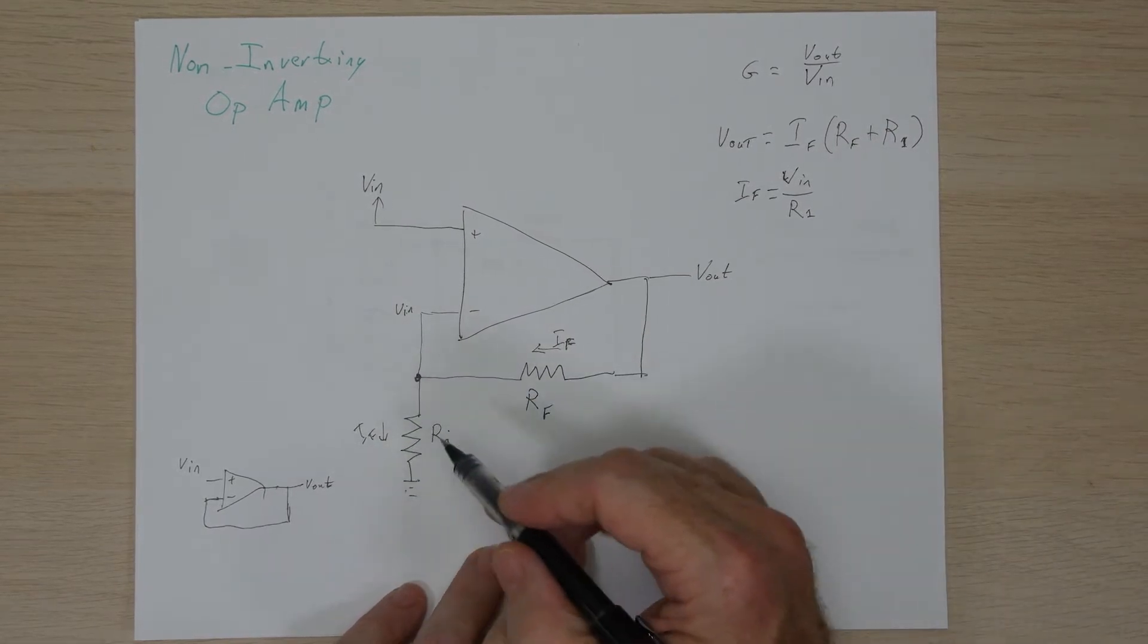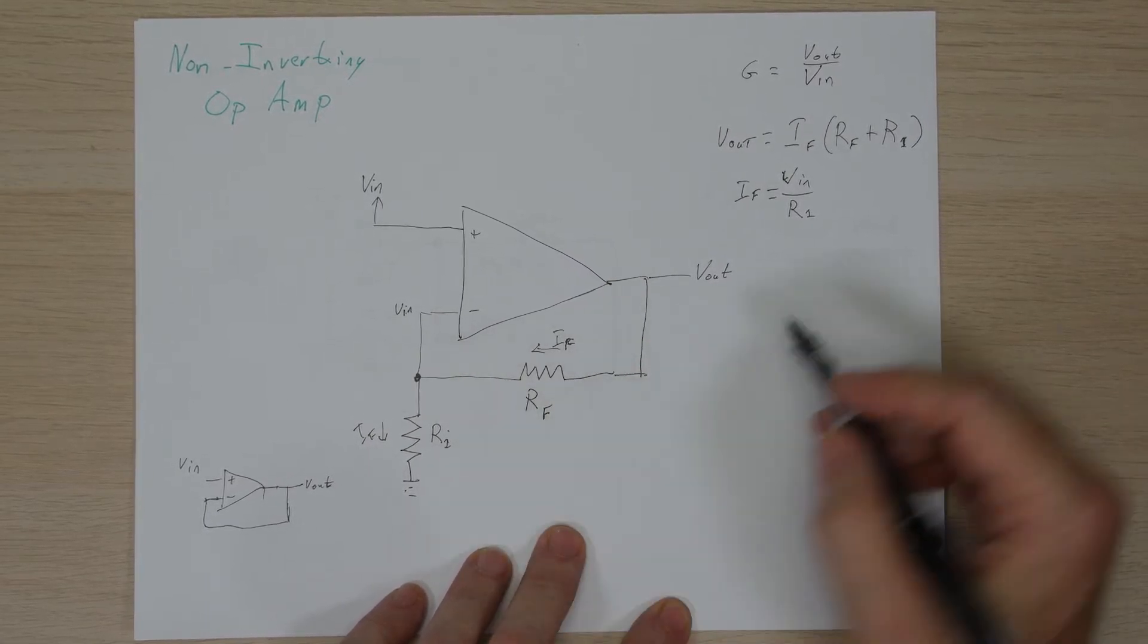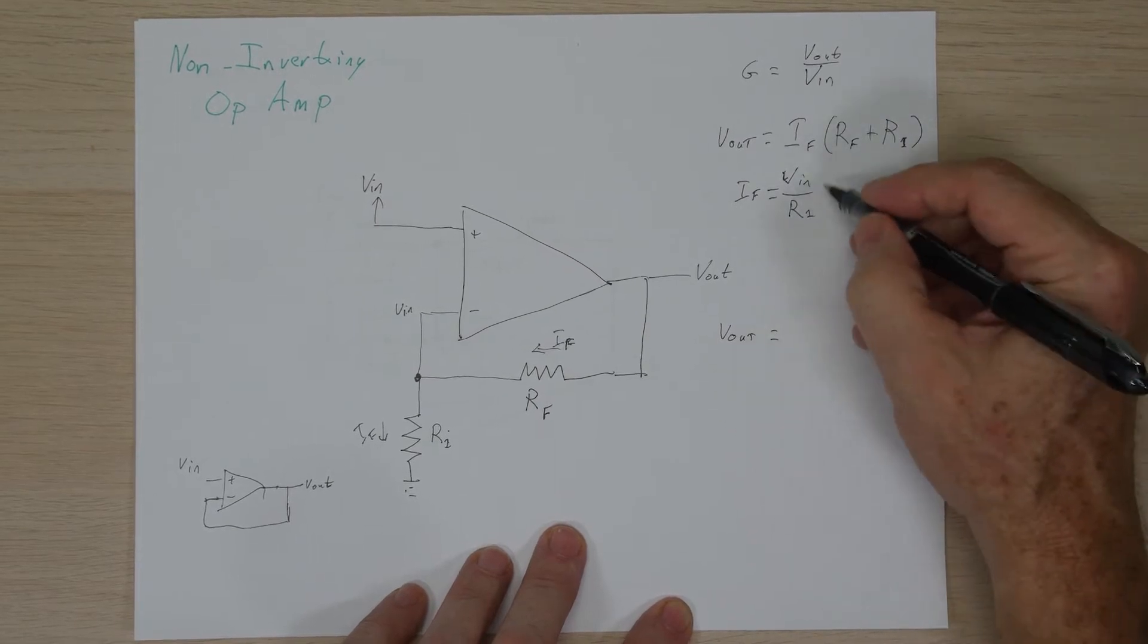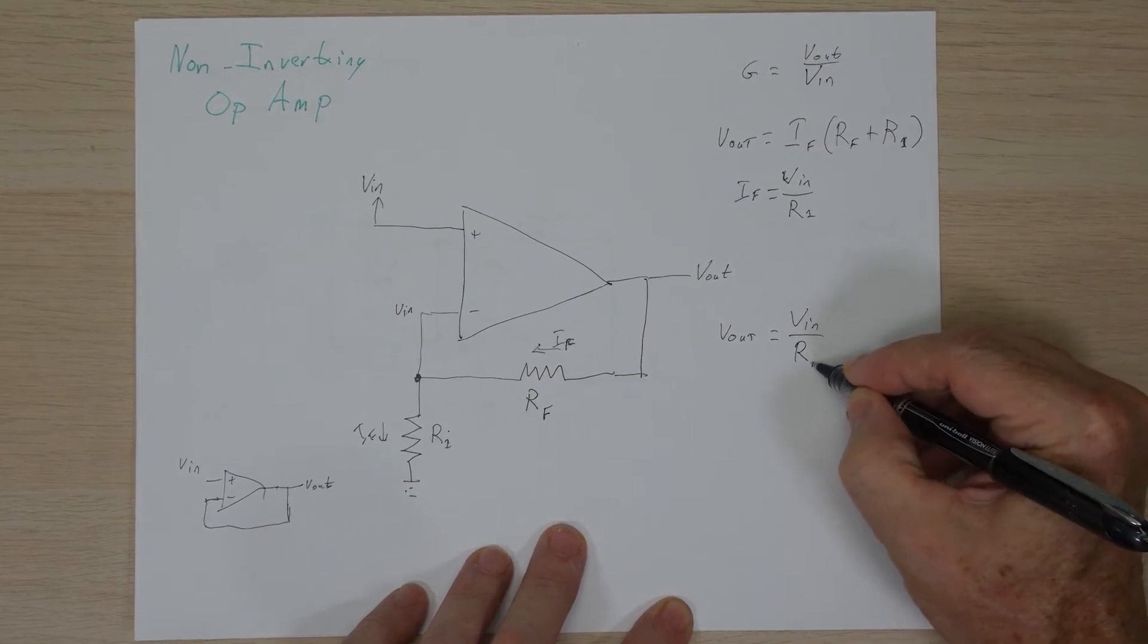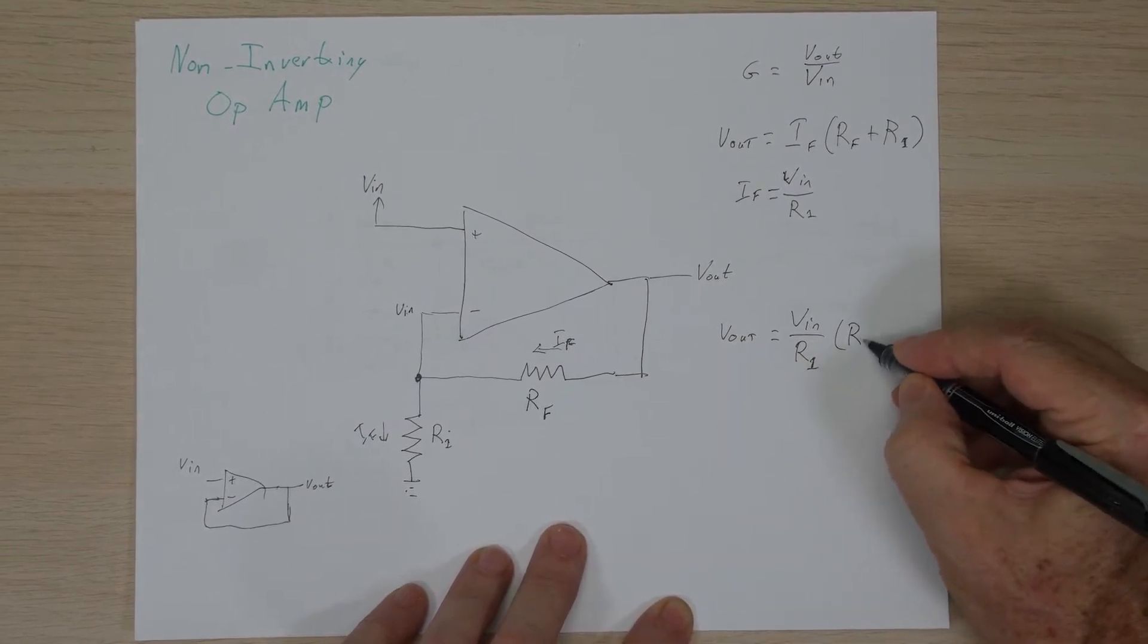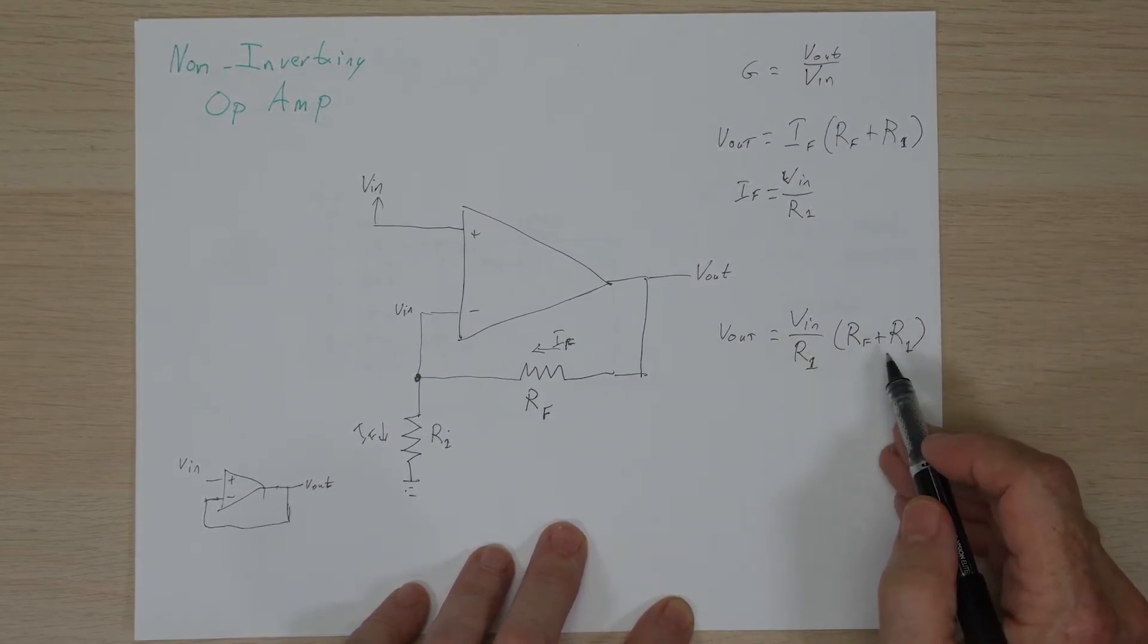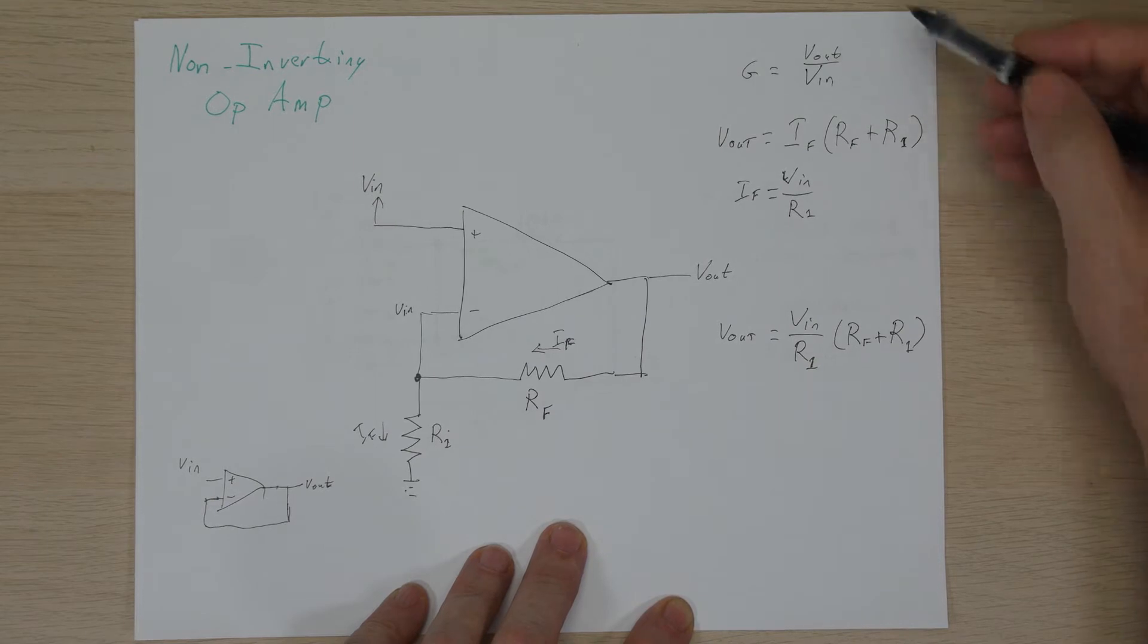Now that we know the feedback current going through here, and also through this resistor, we can go ahead and plug this portion back into the original equation, and we'll see that we now have V out is equal to, we'll put this in in place of that, V in divided by R1, and then times the series resistance RF plus R1. And from here, we can see that we have an equation that has both V out and V in in it. So now we can go ahead and seek to solve it into this form here.